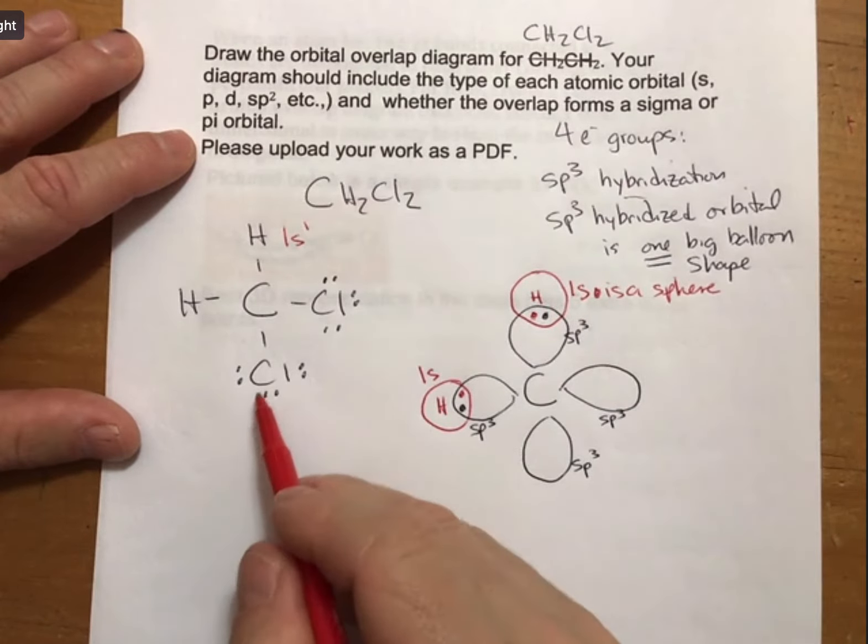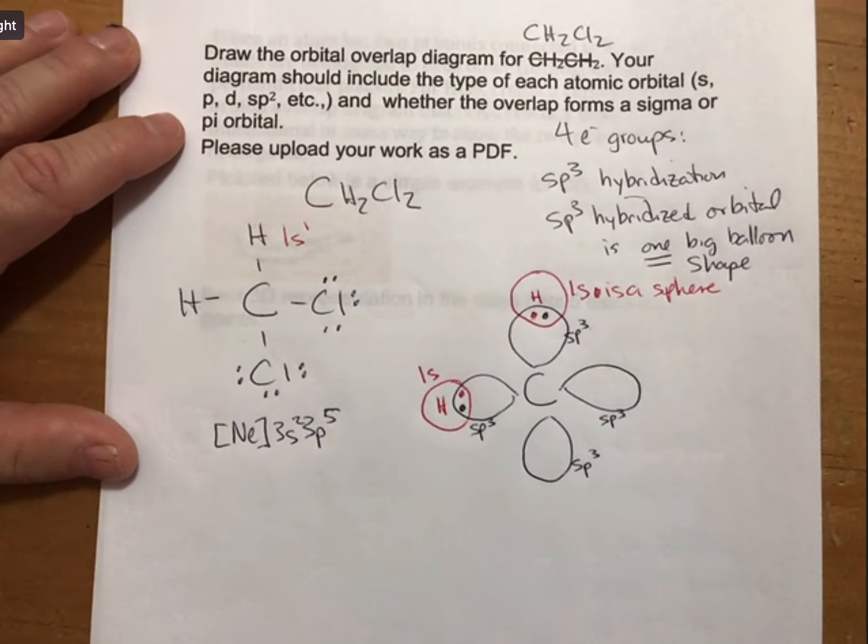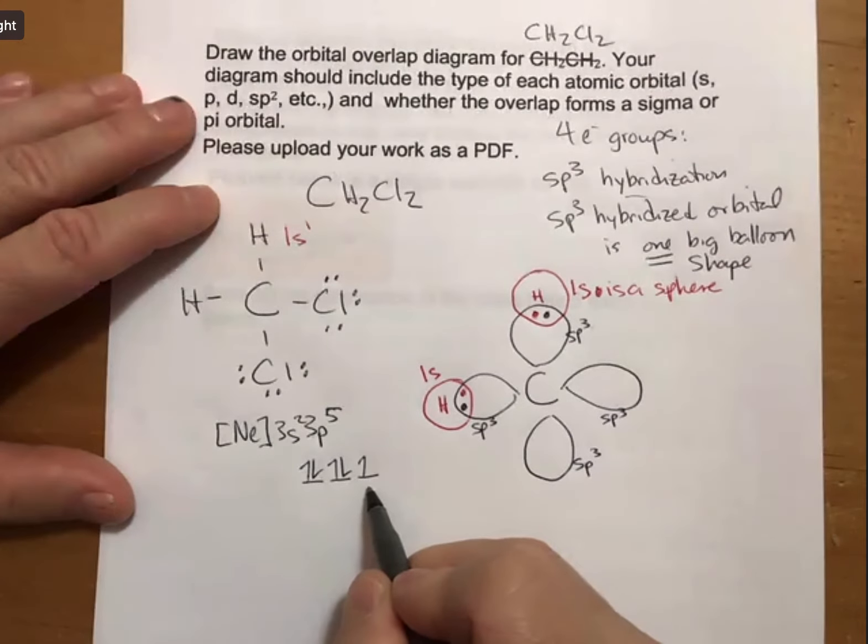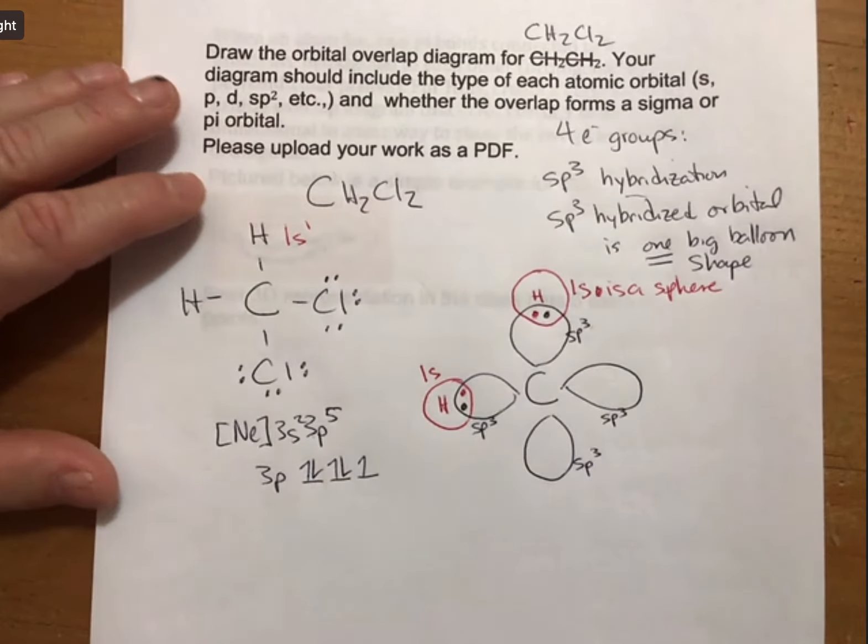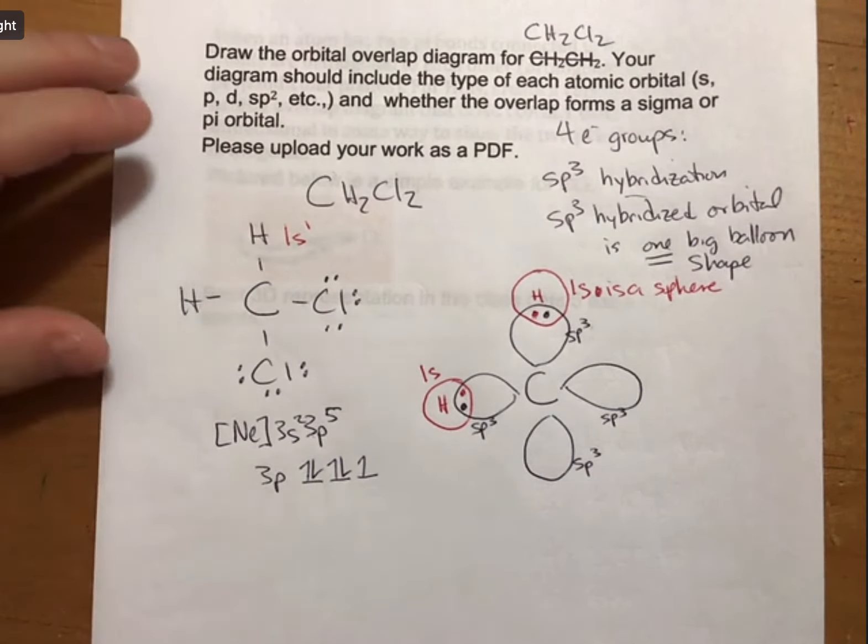Chlorine has neon 3s2, 3p5 electron configuration. Let's backtrack here, take our time. Deep breath. In the 3p of chlorine, there are three orbitals and five electrons. So this is the 3p. Really, this all ties back to our electron configurations, the arrows that show which orbitals are fully occupied and which orbitals are half-occupied.